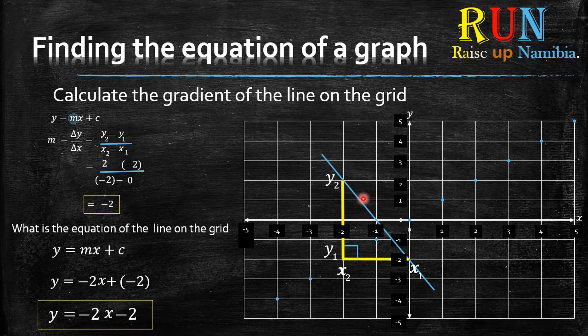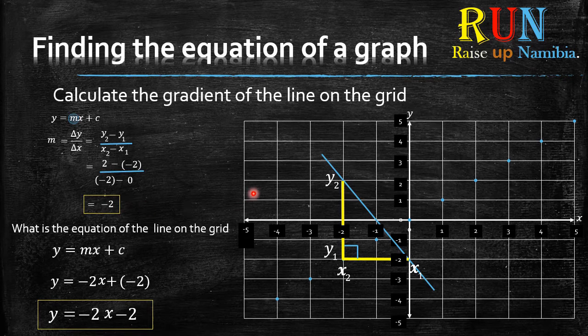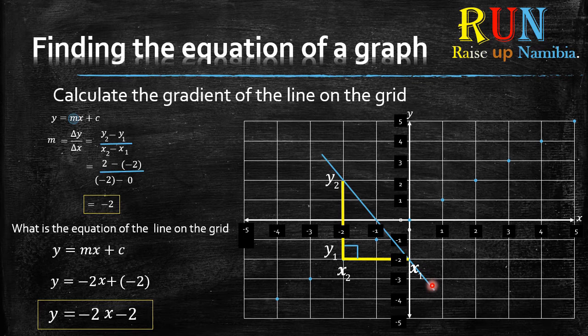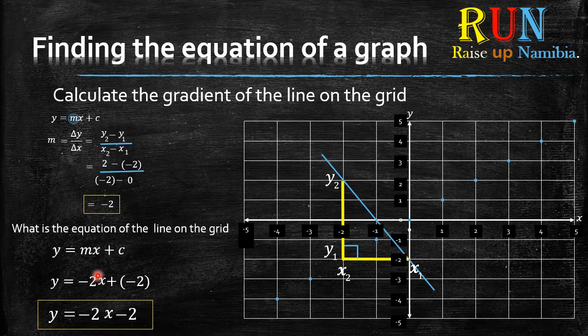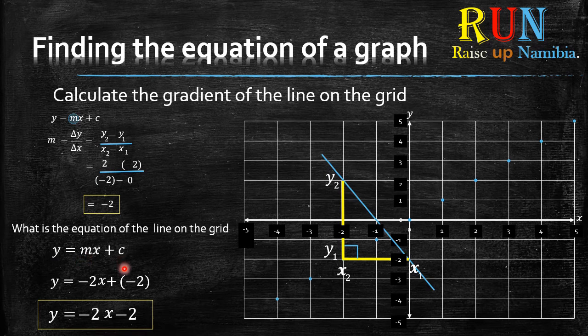Because in the exam, you might not get this gradient given already. You might just get a line, and then they'll ask you to find the equation. So in your mind, you should already know that number one, I need to find the gradient. Then once I found the gradient, I'll have to check where is my y-intercept. Then you incorporate it into your y = mx + c equation, and you get your equation.